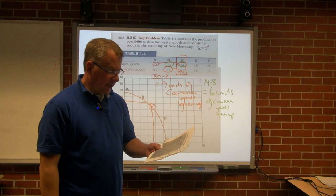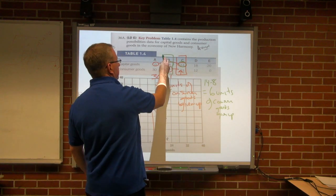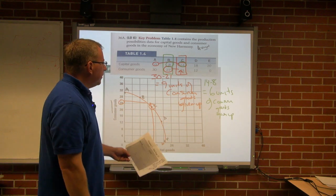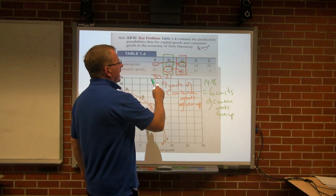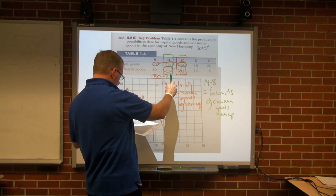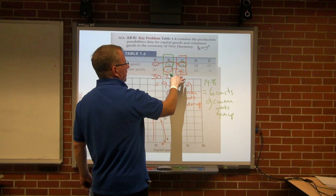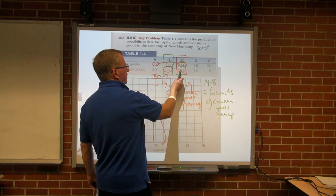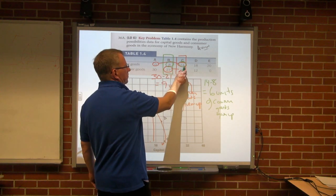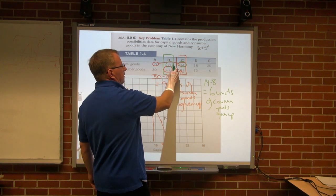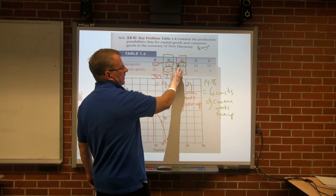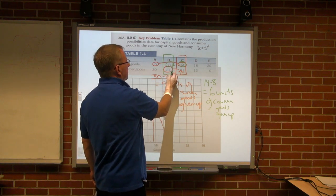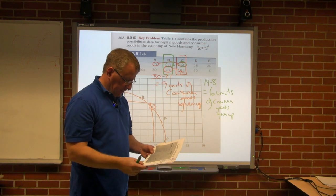Part F: assuming the economy is producing at combination B - which is 8 capital, 27 consumer - what is the approximate per unit cost of an additional capital unit? Going from 8 to 14, that's a raise of 6 capital goods. And 27 to 21 is a decline of 6 consumer goods. So as we make more capital goods, it's 6 gained for 6 given up - for every one extra capital good, you're giving up one consumer good. If we add an additional unit of capital goods, we decrease an additional unit of consumer goods. So there's a one-to-one decline.